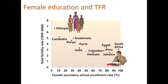So here in this graph, it's pretty simple. We see that less education, more babies. Ethiopia — only 5% of women are enrolled in secondary school, aka high school — whereas in Jamaica, over 80% are enrolled.